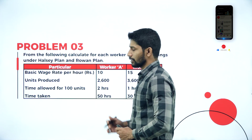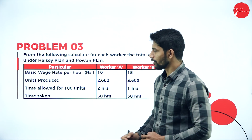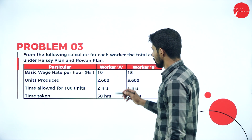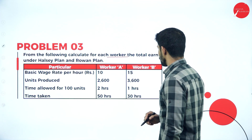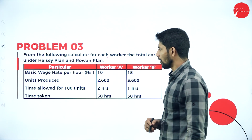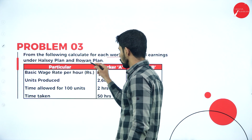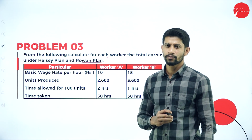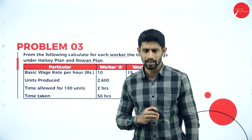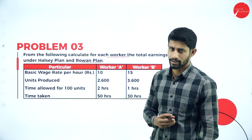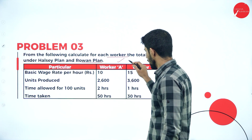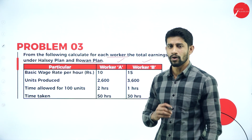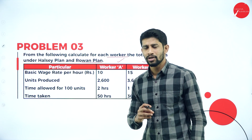In the last session we solved two problems. Now this is the third problem. From the following, calculate for each worker the total earnings under Halsey plan and Rowan plan. Using this information, we are supposed to find out the total earnings of worker A and worker B under Halsey plan and also under Rowan plan.